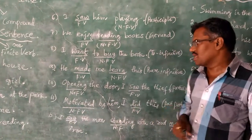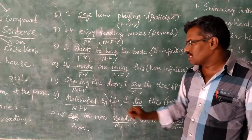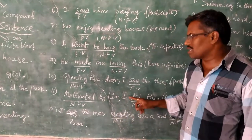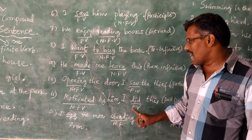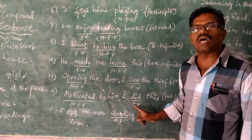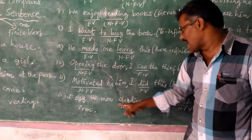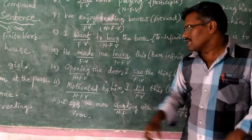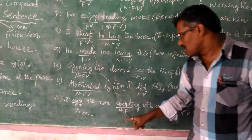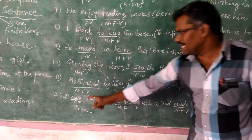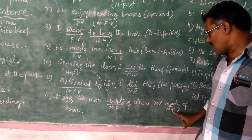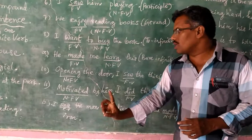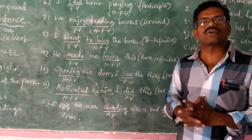Next: 'Motivated by him, I did this.' In this sentence also, there is only one finite verb, so it is called a simple sentence. Look at this one: 'I saw the man standing with a rod made of iron.' It seems to be a lengthy sentence, but it is a simple sentence. Because in this sentence we have three verb forms — 'saw,' 'standing,' and 'made' — but 'saw' is the only finite verb form, while 'standing' and 'made' are non-finite verb forms. So even with three verb forms, only one finite verb is there, and this sentence is also called a simple sentence.